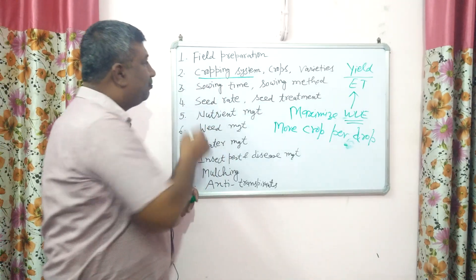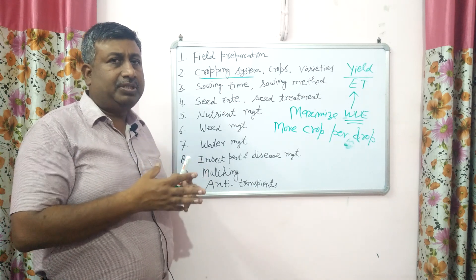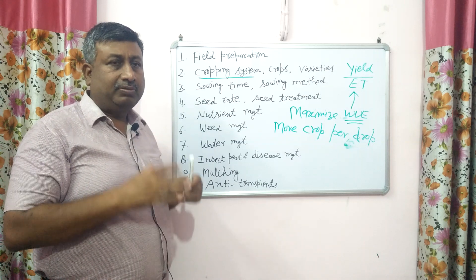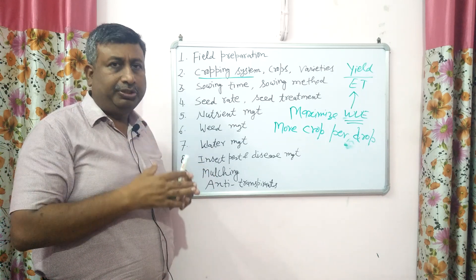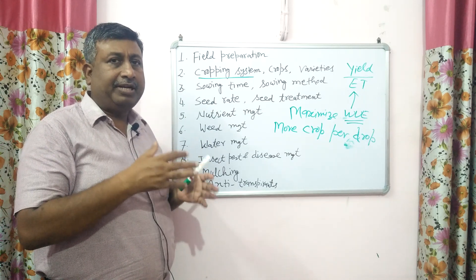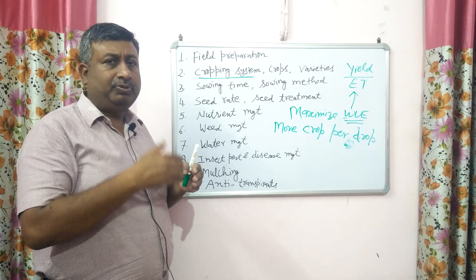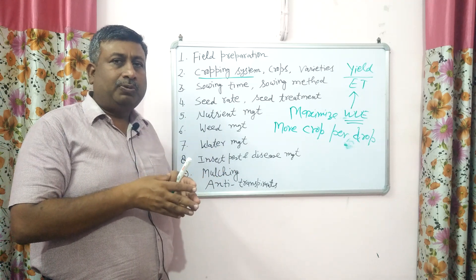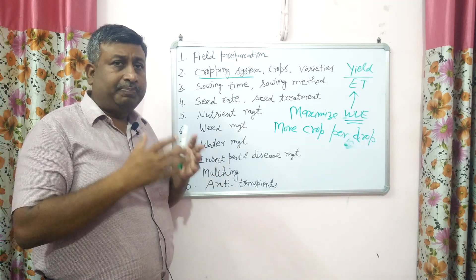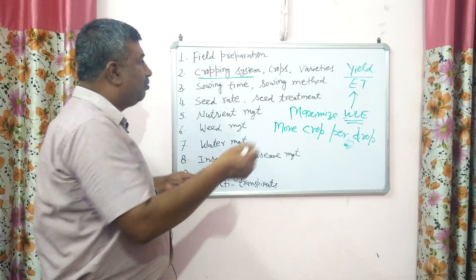Another important aspect is the cropping system. Selection of cropping system is very important — there may be double, triple, relay, inter, or mixed cropping systems. But in rainfed areas, moisture availability is poor, availability time is less, and the growing period is also less. So we select a cropping system that is not of longer duration and is sustainable with profitable yield. Inter-cropping — cereal plus legume, or cereal plus oilseed, or legume plus oilseed — is mainly practiced. Growing different types of crops means that if one crop fails under drought or abiotic stress, the other can survive. Inter-cropping provides insurance against drought and other biotic and abiotic factors.